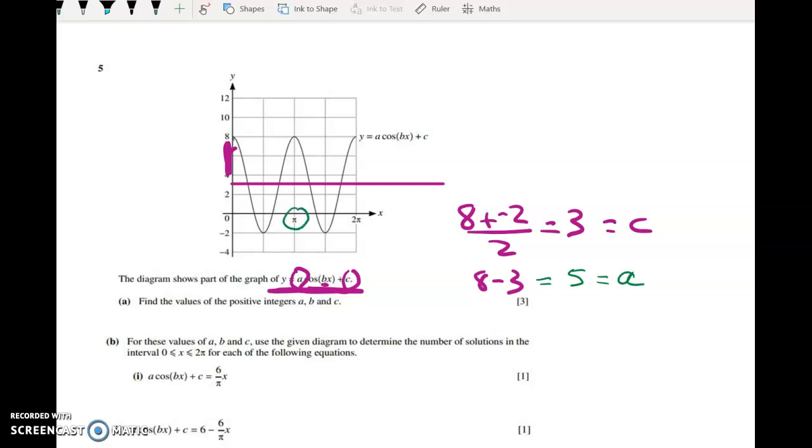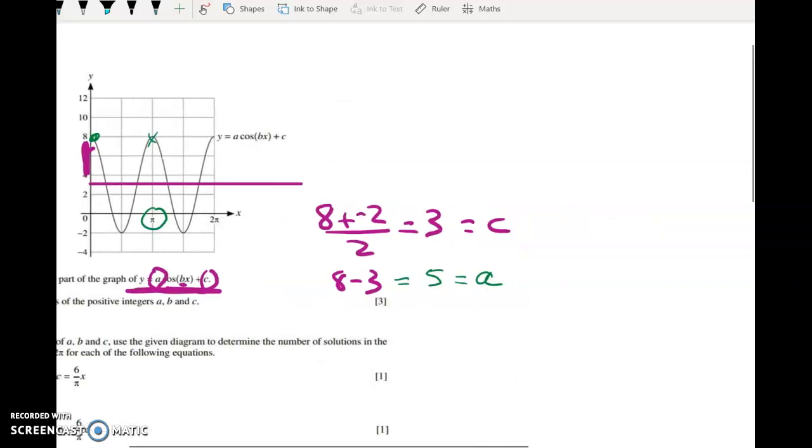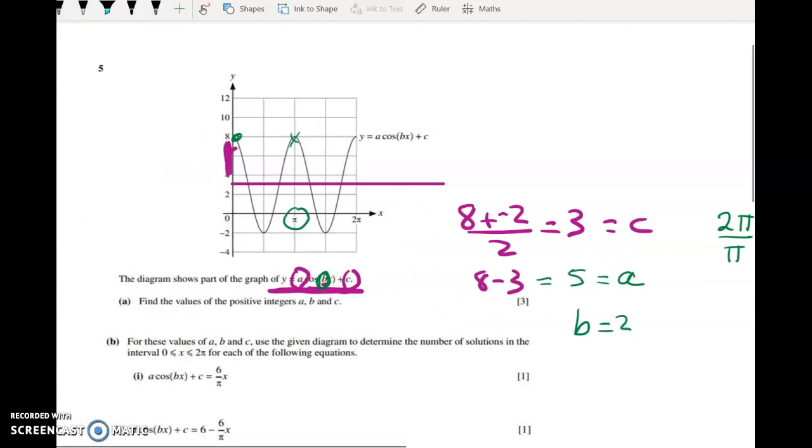Lastly, look at the period of the function. One full cycle is taking only pi instead of 2 pi. The period normally is 2 pi, but ours is pi, so 2 pi over pi is 2, and that's how I work out this coefficient. So b equals 2, giving us y equals 5 cos 2x plus 3.